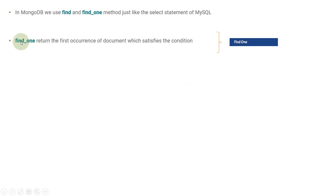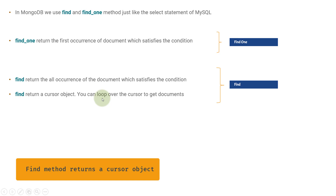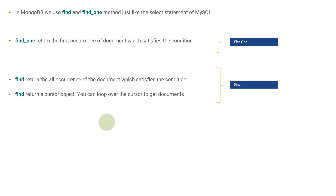If you want to get a single document, you need to use find_one. find_one returns the first occurrence of the document. Find, on the other hand, returns all occurrences that satisfy the condition. Now, find does not return the documents themselves — it returns a cursor object, and you need to loop over the cursor to get each document. So find_one returns the document directly, while find returns a cursor object which you then loop over using a simple Python loop.